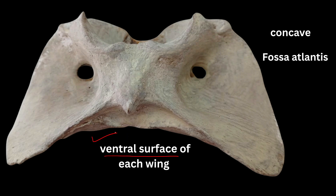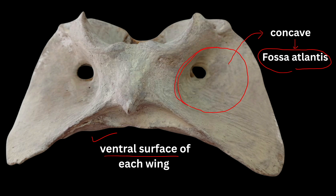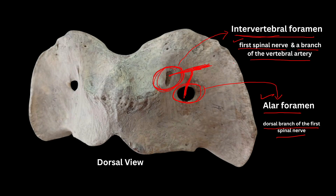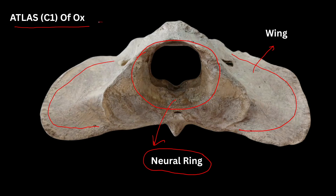The ventral surface of each wing is concave, which is called the fossa atlantis.